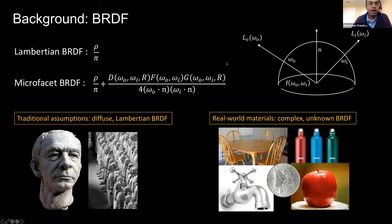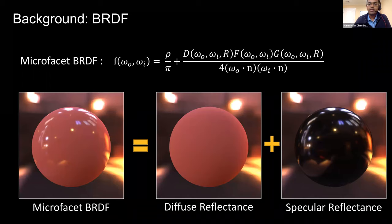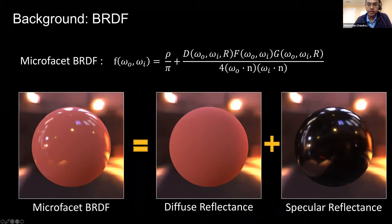The BRDF encodes the fraction of light arriving from a direction that is reflected toward the camera. It is an intrinsic property of the material and characterizes its appearance. Many works assume a diffuse BRDF where material reflects light uniformly in all directions, but real-world materials exhibit gloss or specularity. A common way to handle opaque BRDFs is through a microfacet representation combining diffuse and specular terms, where the specular term is controlled by a roughness parameter R.